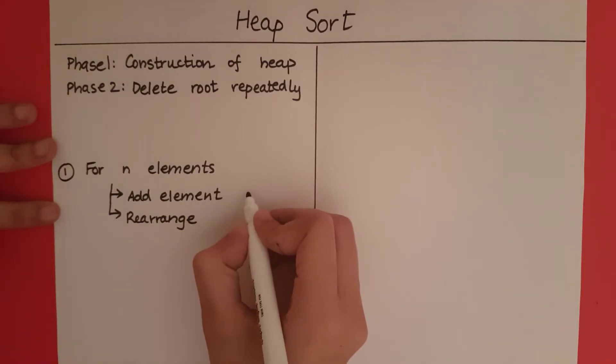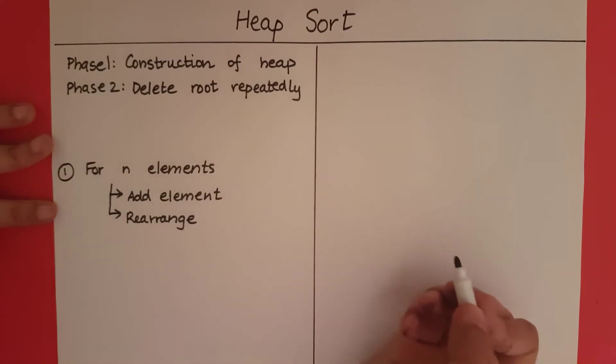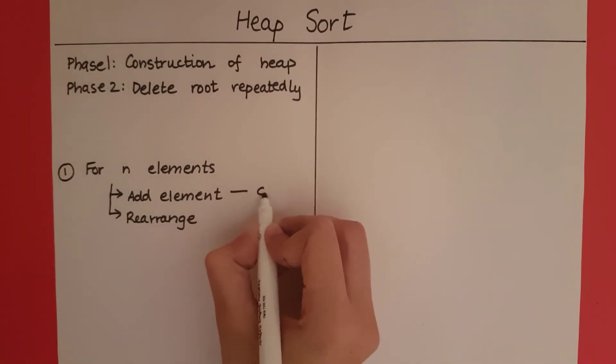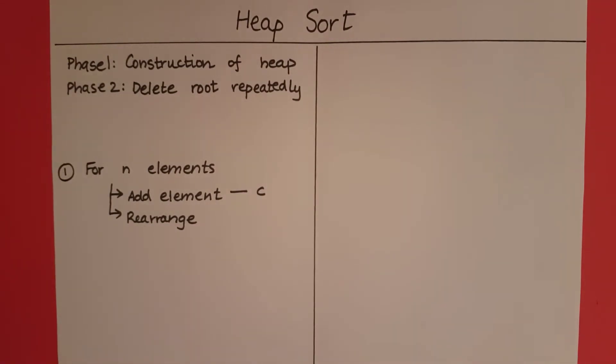Adding the element to the heap is going to take a constant time because we are simply adding it to the first available space in the heap. If it's the case of top-down, if it's bottom-up, we are going to just connect the two existing heaps with k as our root. Either way, adding the element is going to take a constant time. Let's say that constant is c.